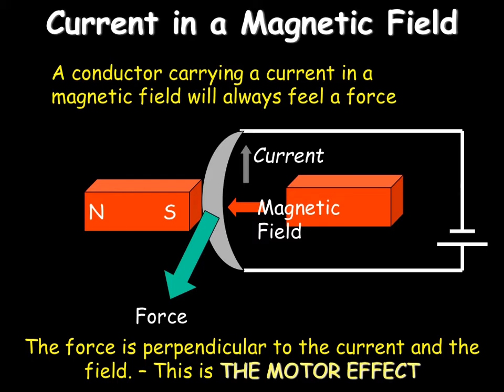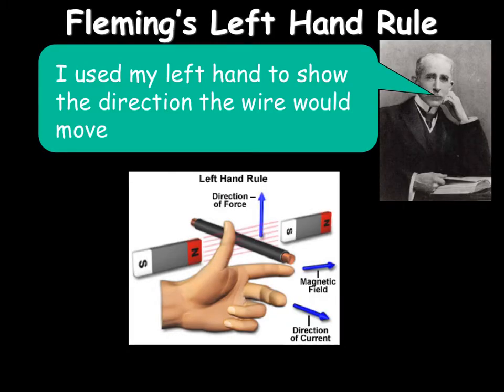The force is always perpendicular to the direction of the current and the field. Fleming first came up with this idea and explained the direction of forces using his left hand - if the first finger is the magnetic field and the second finger is the current, the thumb is the direction of the force.